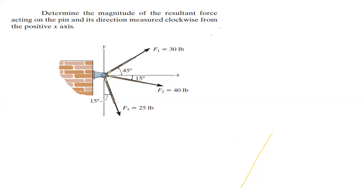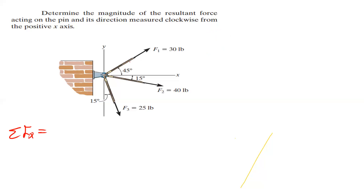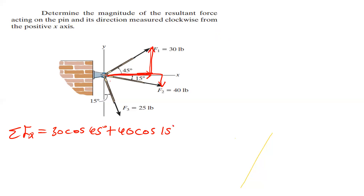We find the summation of forces in x and the summation of forces in y. For the x-components: the x-component of the 30-pound force is 30 cos 45°, because drawing the triangle shows we are moving towards positive x and positive y. Then for F2, which also moves towards the positive x-axis and then downward, we have 40 cos 15°.